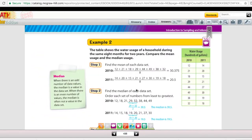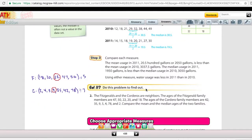At the top of page 435, we're looking at example two. The table shows the water usage of a household during the same eight months for two years. And it says to compare the mean and the median usage. And so for this problem, we're going to calculate the mean and the median for both pieces of data. And then we're going to compare them. So for example two, on page 435, we have the Fitzgeralds and the Corderos, and I've already lined up all of their ages over here on the left. So I've put them in order from least to greatest so that I can find the median.